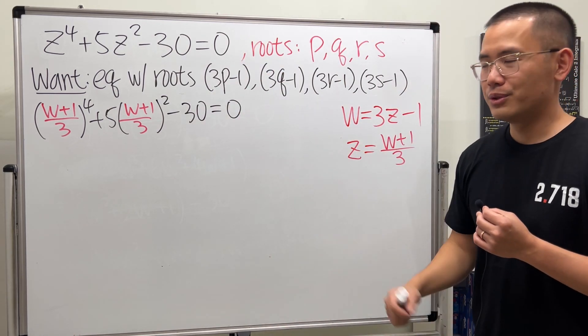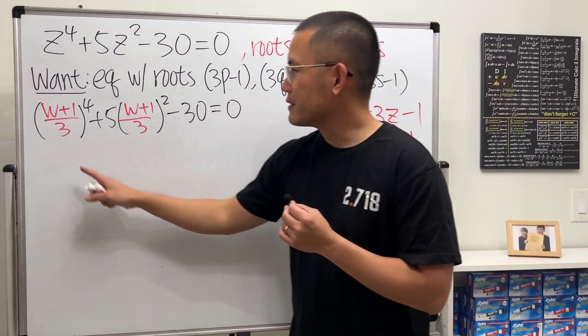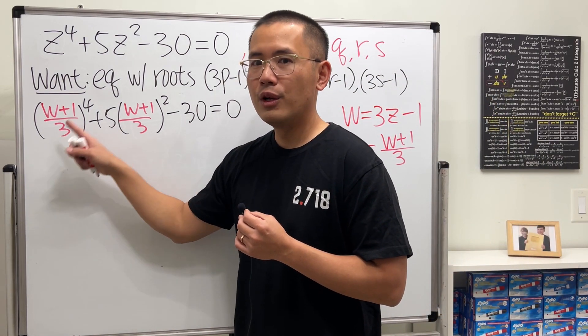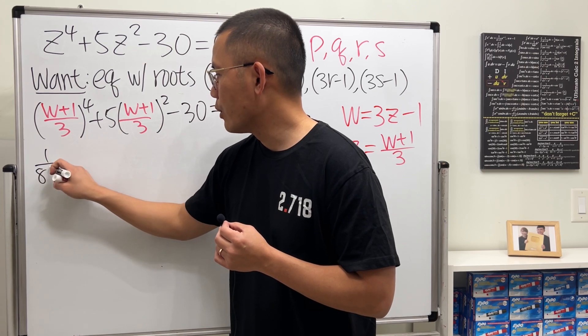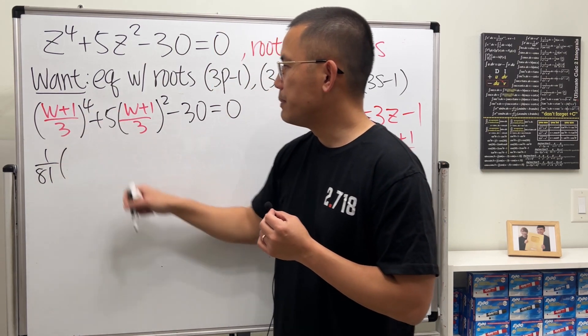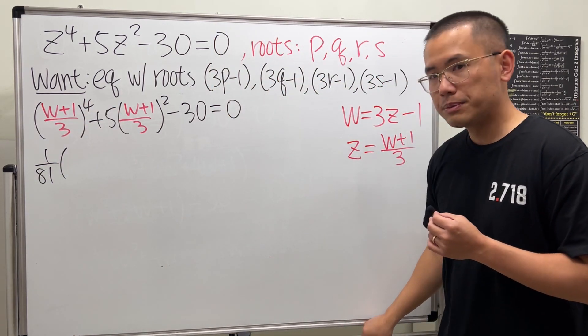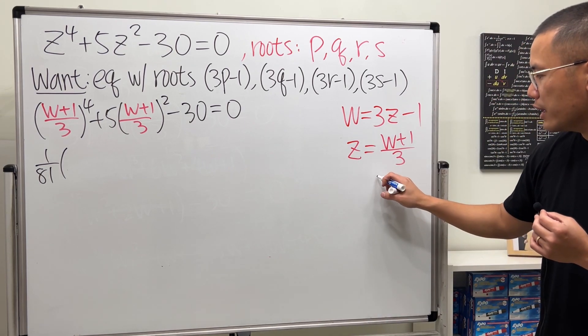That's true, because p is the root of the original. So if you put p in here, you'll get 0. So that's the idea. So now the rest is just to do the computation. So firstly, we have the 3 on the bottom raised to the 4th power. I'm going to write it as 1/81 all the way in the front. And then, to expand (w + 1)^4, let's look at Pascal's triangle.